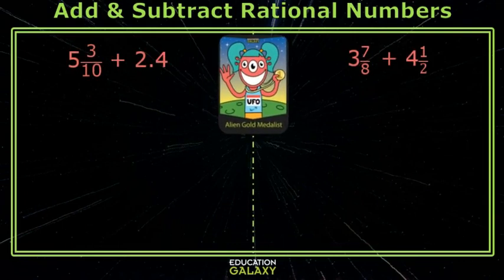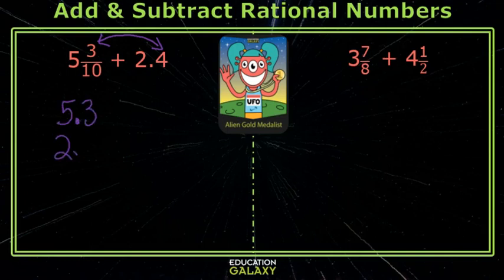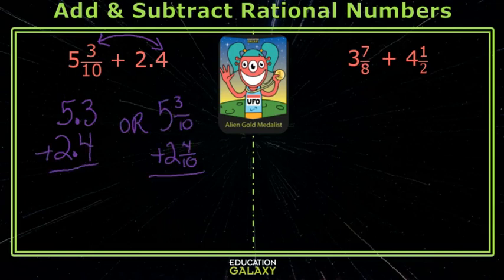Alright, so let's look at a couple of examples. If I want to add these two numbers, I either need to write my 3 tenths as a decimal or my 0.4 as a fraction. So 3 tenths as a decimal would be 5.3, and remember when you add or subtract decimals, you have to line them up. You can work this either way. When you're adding or subtracting fractions, you have to have a common denominator. I know that 1 half is the same as 4 out of 8, so I can rewrite this problem with a common denominator of 8.